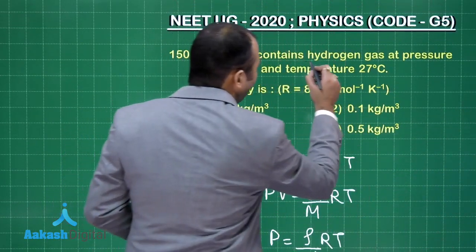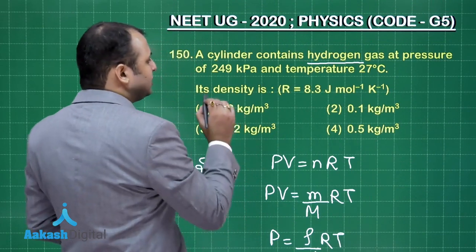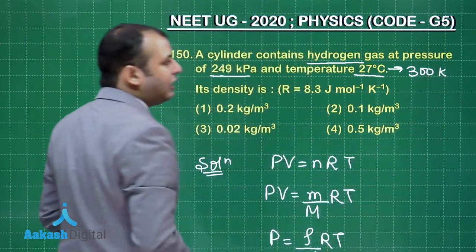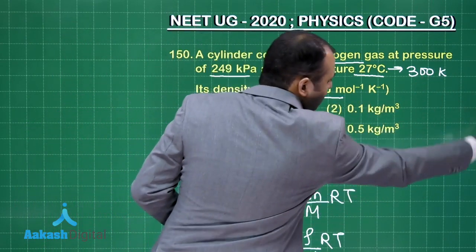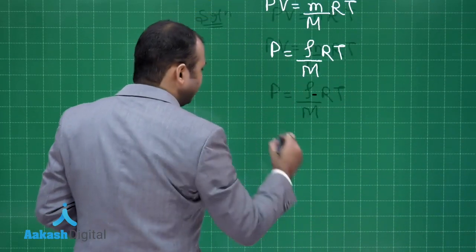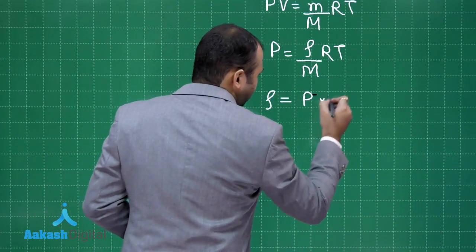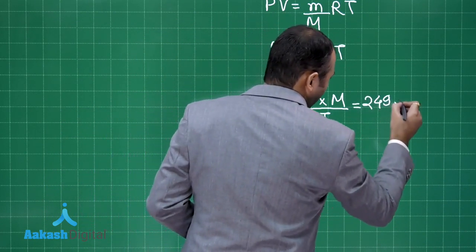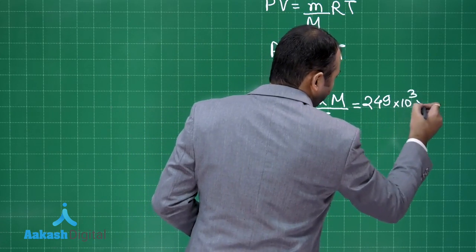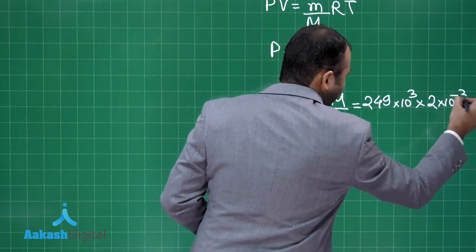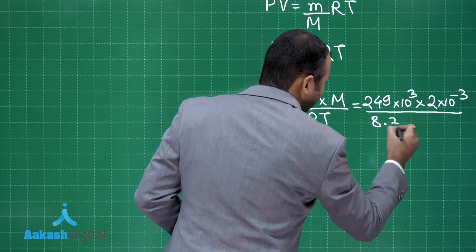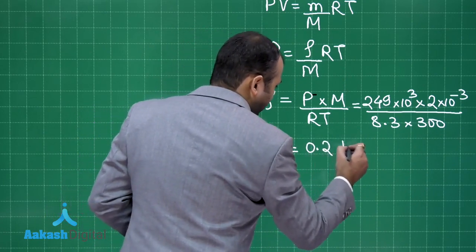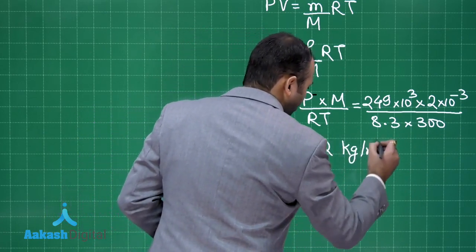This gas is hydrogen. The temperature, converted to kelvin, is 300 K. Density equals pressure times molecular mass divided by RT. Putting in the values: 249 into 10 to the power 3 pascals, molecular mass of hydrogen is 2 grams converted to kilograms, divided by R equals 8.3, and T equals 300. Solving this, we get density equals 0.2 kilograms per meter cubed.